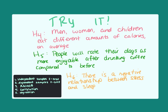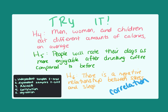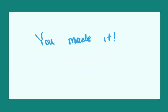Three more hypotheses: men, women, and children would eat different amounts of calories — three groups, so this requires an ANOVA. People will rate their days as more enjoyable after drinking coffee compared to before — the keywords 'after' and 'before' indicate a dependent samples t-test, one group tested under two different conditions. Finally, there is a negative relationship between stress and sleep — the word 'relationship' indicates a correlation. Notice 'correlation' has the word 'relation' in it. You've made it through a review of five commonly used statistical tests, foundational tools used by researchers in many different careers.